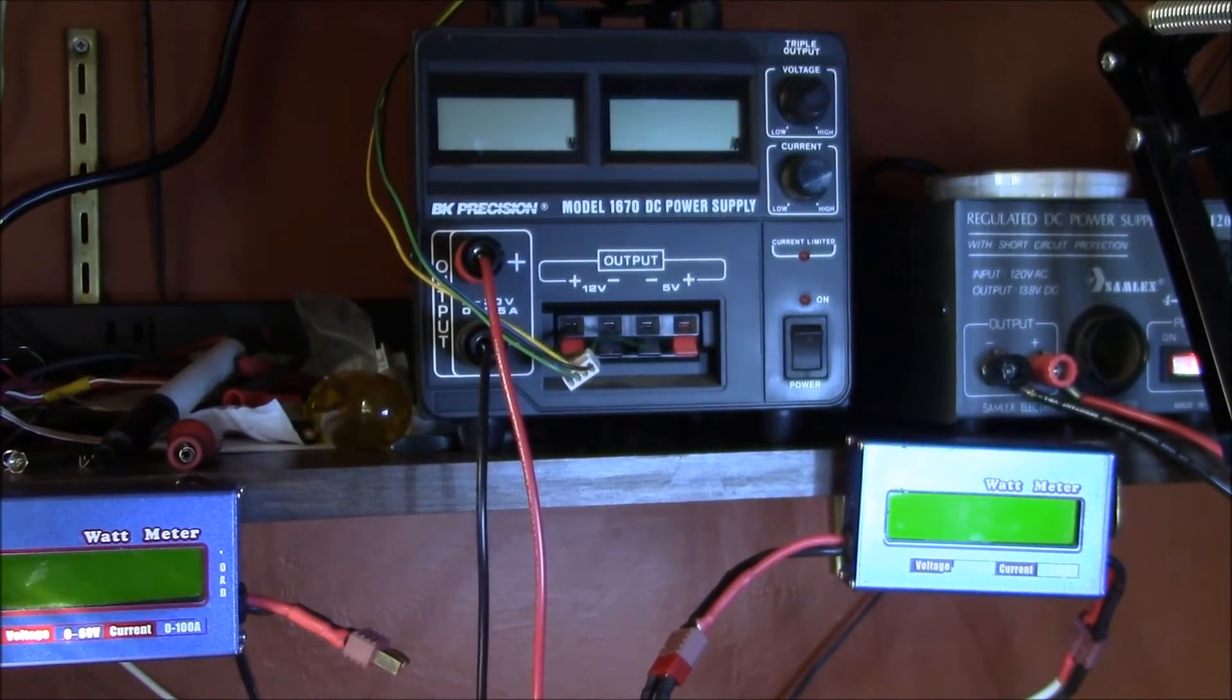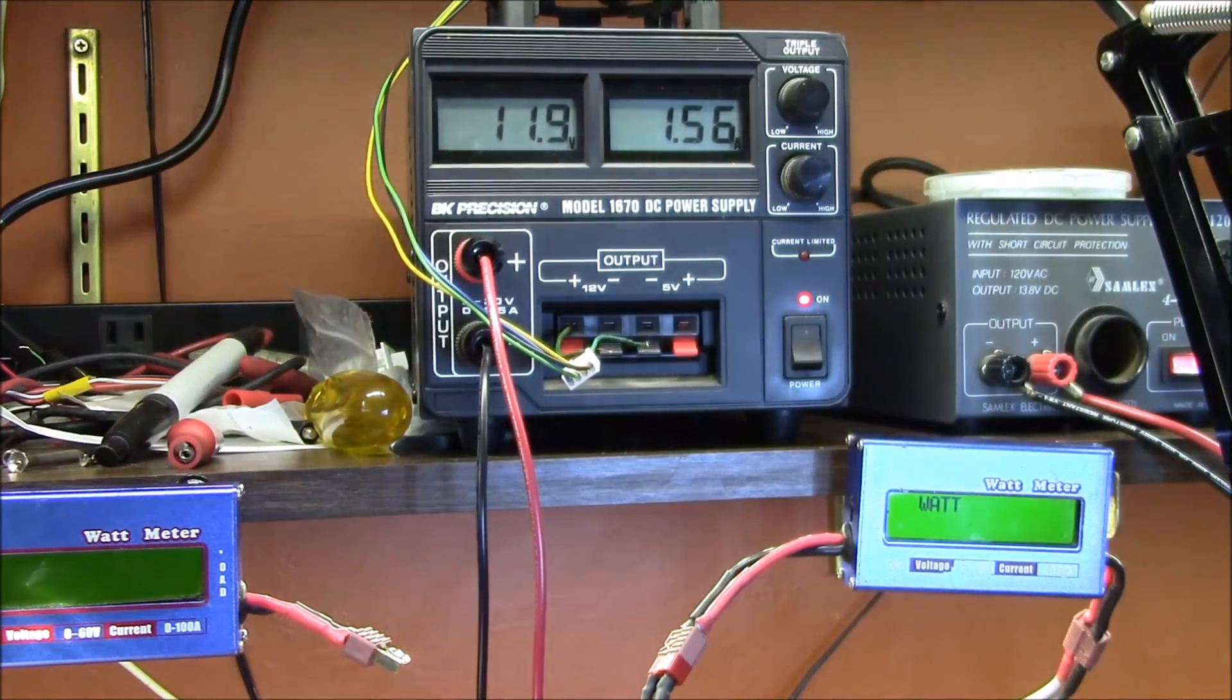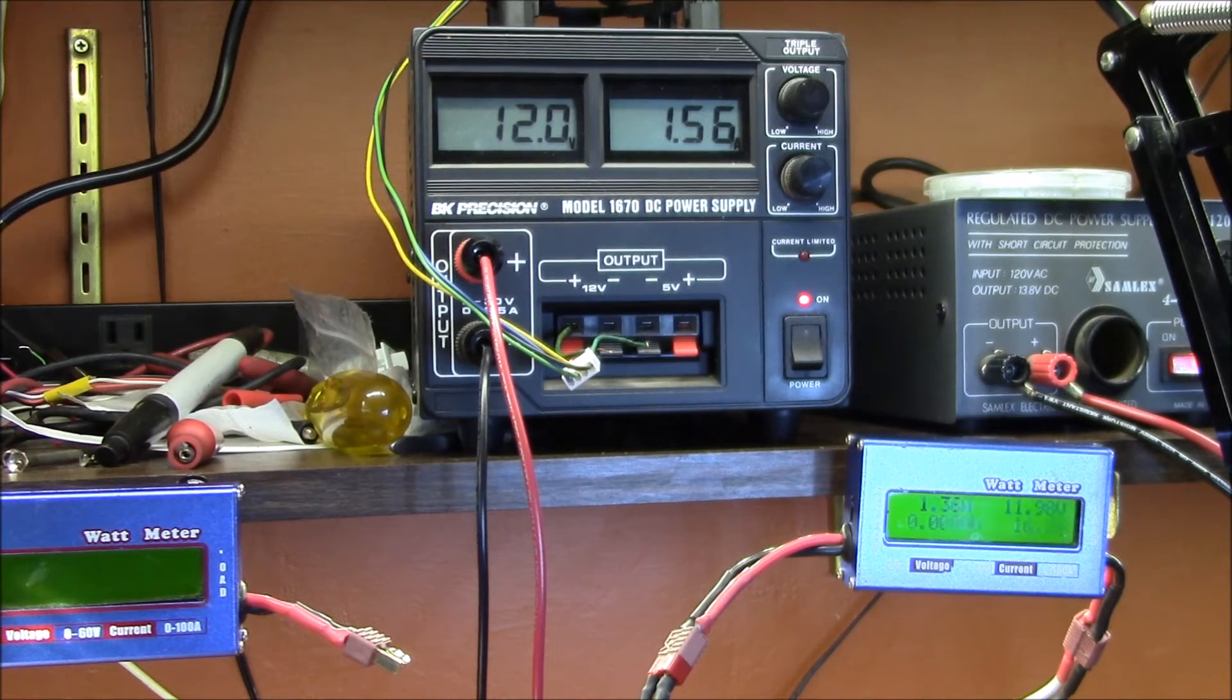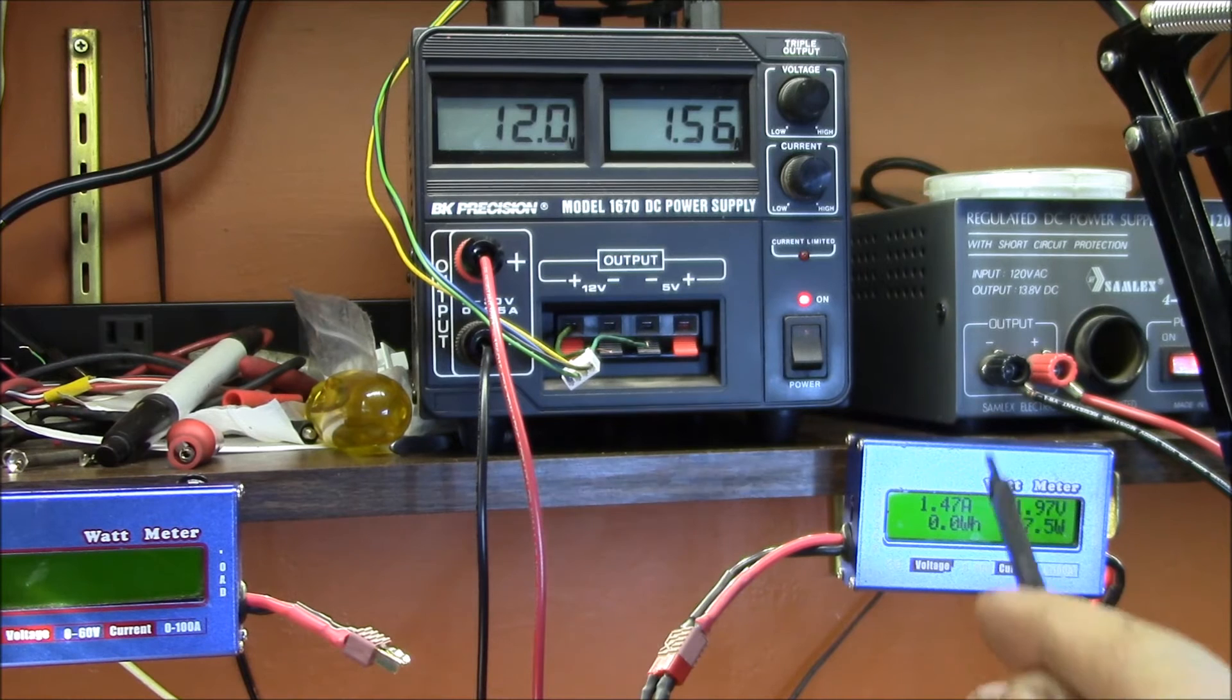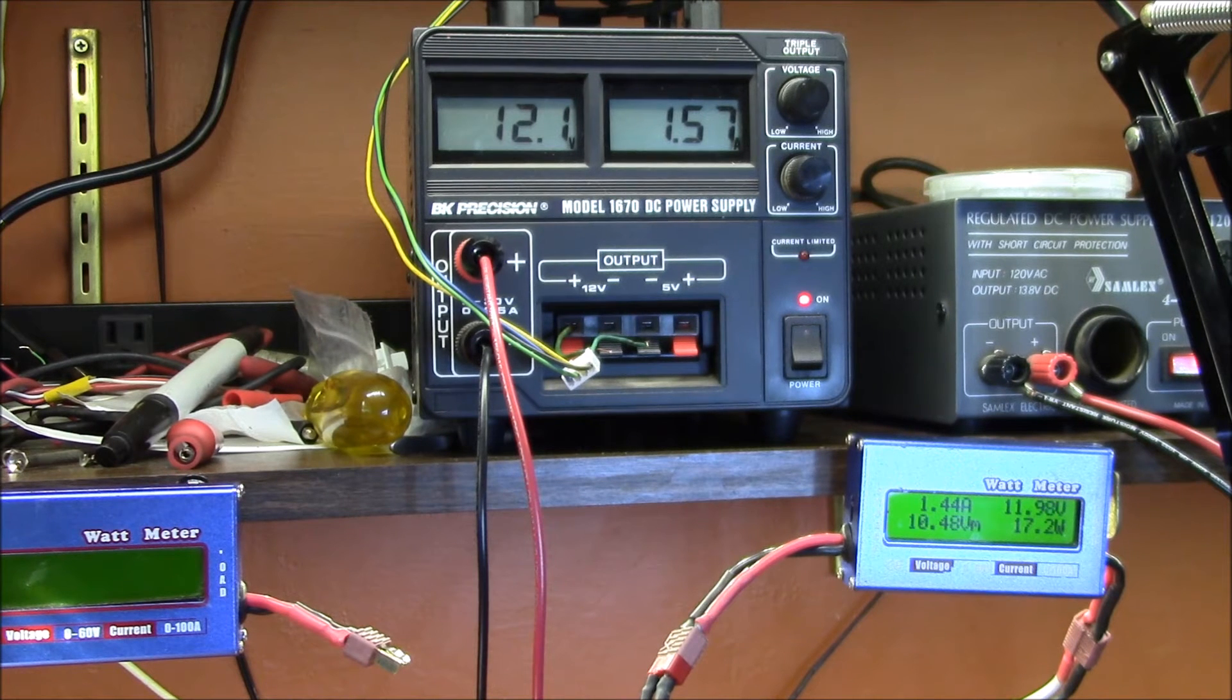For this test I'll use my bench supply to feed power into a 5 meter LED strip light. And I have a DC watt meter at the power input to the strip. Then I'll test the voltage, current, and power into the LEDs at various voltages.